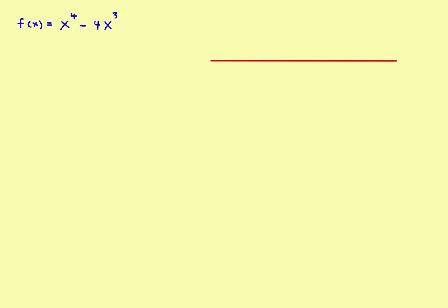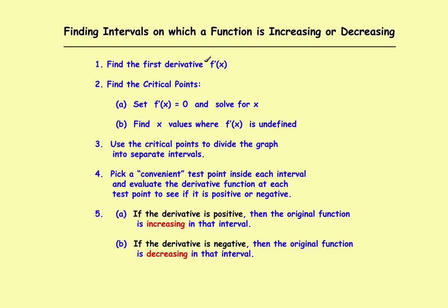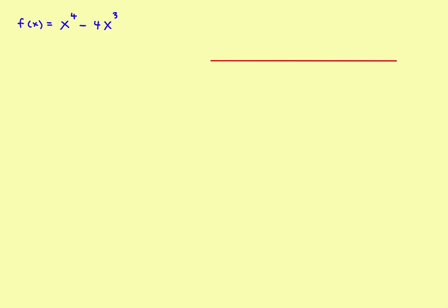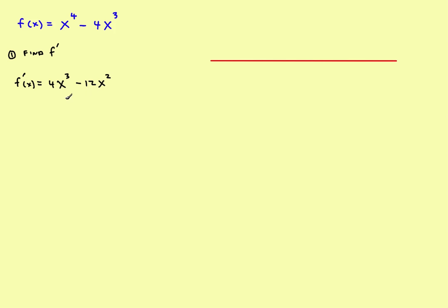So back to the list of steps. The first thing to do is find the first derivative, because that will give you the critical points. We'll use the power rule to do that. So on this problem, step number one: the first derivative, f prime of x, is going to be 4x cubed minus 12x squared.